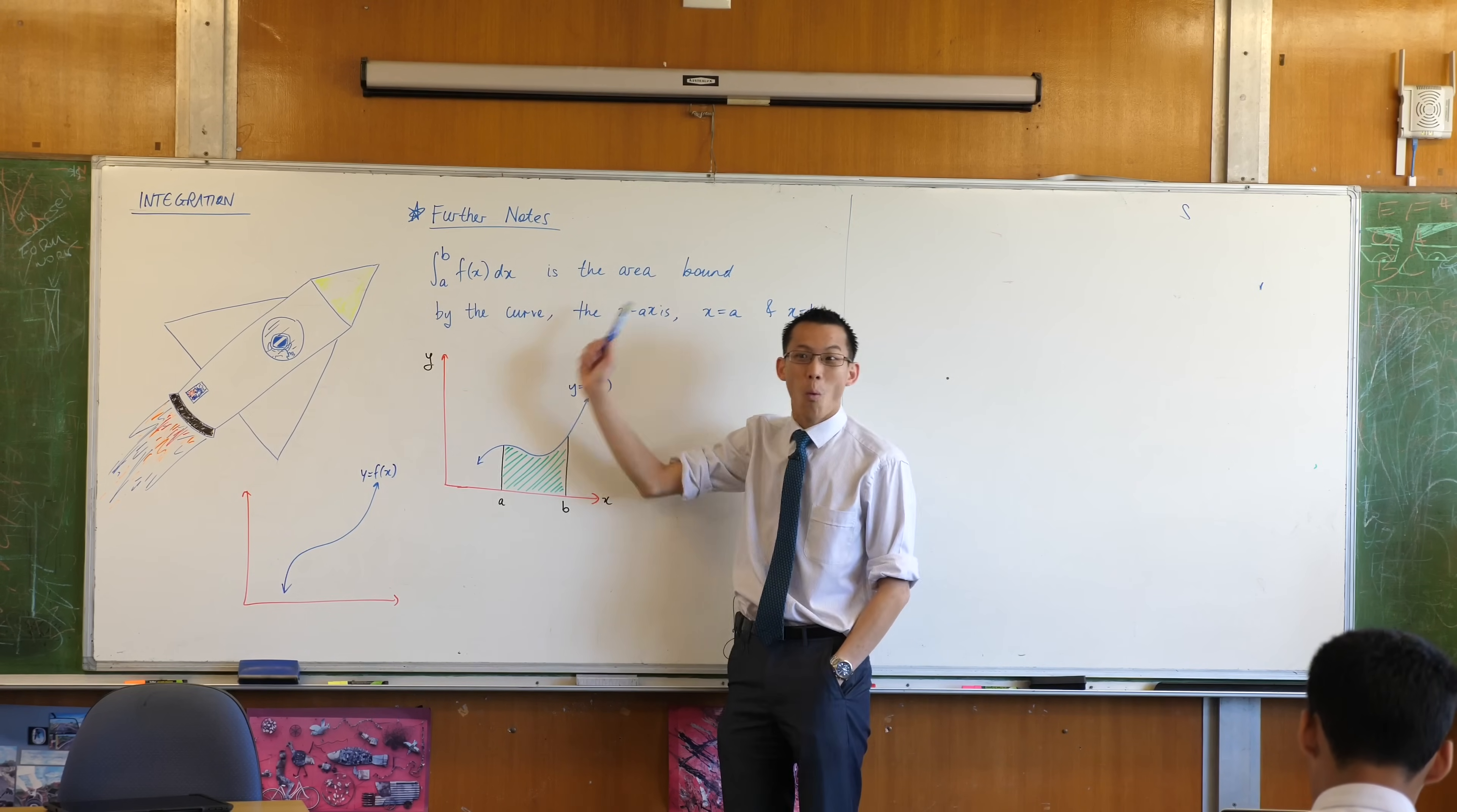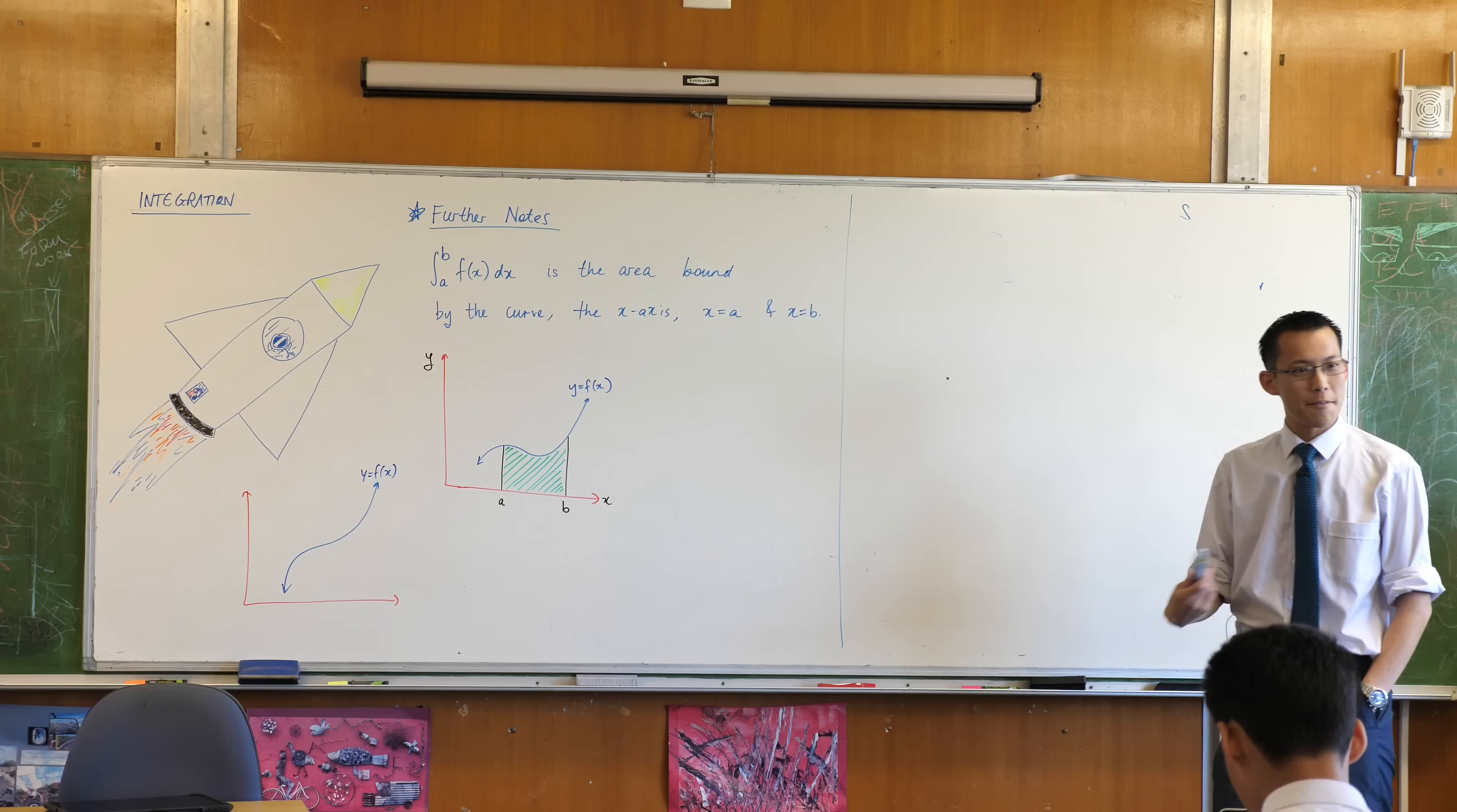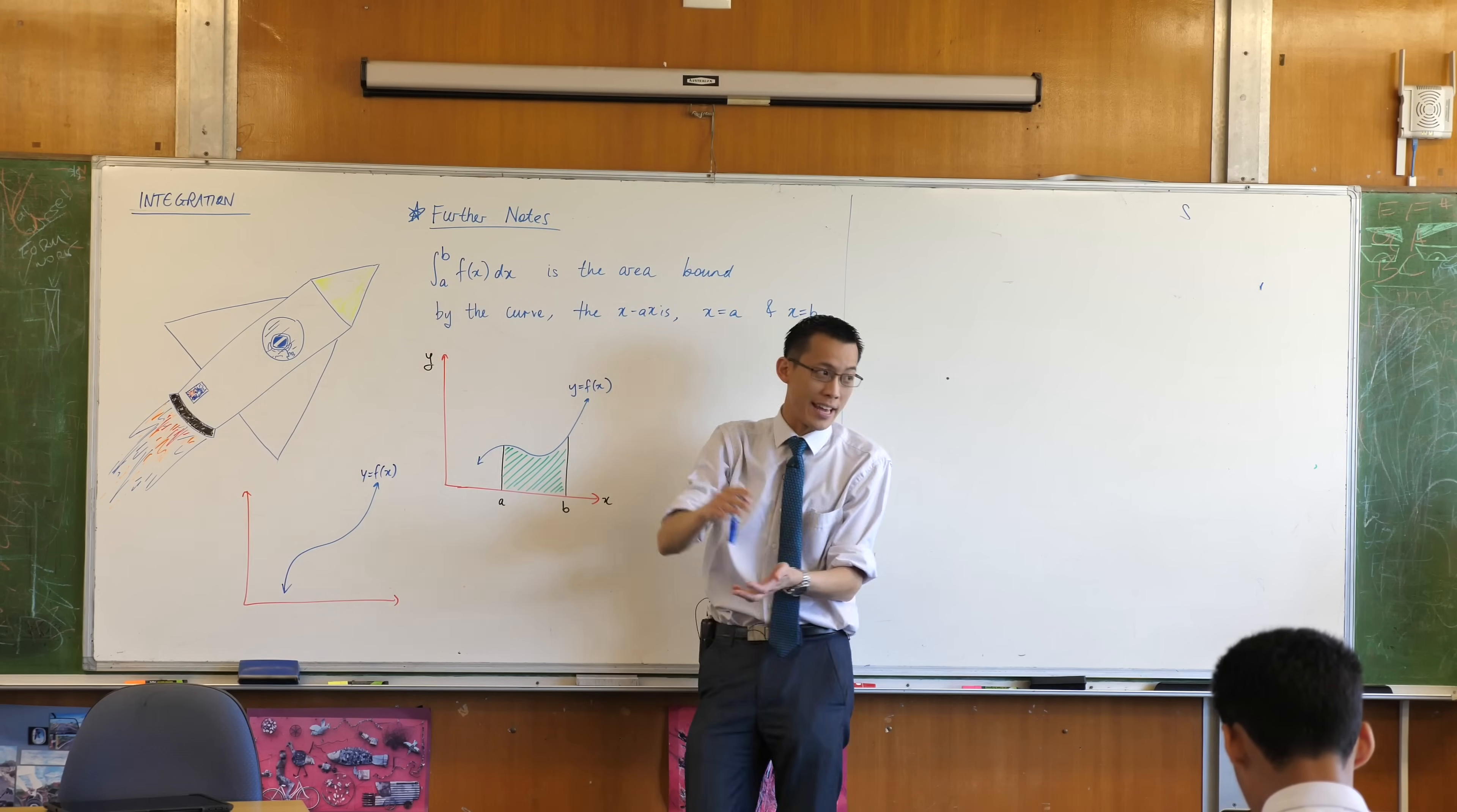this weird thing here, what is it? Well, when you see that weird symbol, it's called the integral sign. The integral sign means, as the letter suggests, you're adding up a bunch of things. You're taking a sum. That's why it's literally a stretched out S.